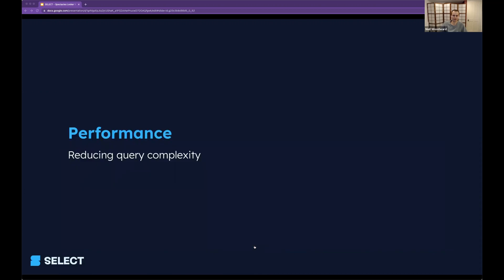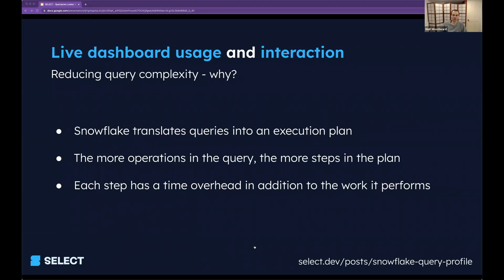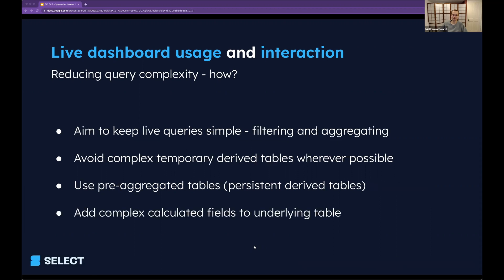Let's move on from clustering and data scanned onto query complexity. Why would we want to reduce query complexity? Snowflake translates every query you write and all the steps within that query into an execution plan, which is then run on the virtual warehouse you're using. The more operations in your query, the more steps in that plan, and the more operations Snowflake needs to perform to answer your query. Every single step has a fixed time overhead in terms of moving data across processes, in addition to the work being performed. As much as possible, aim to keep live queries really simple — filtering and aggregating only — and do complex logic ahead of time in pre-aggregated tables.